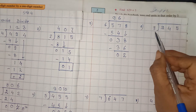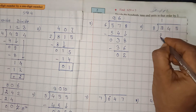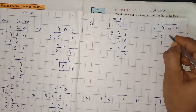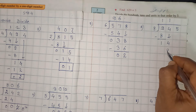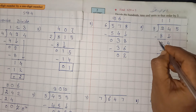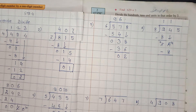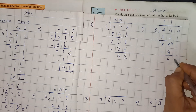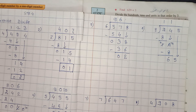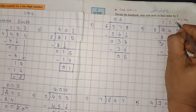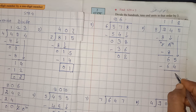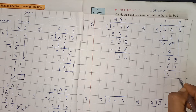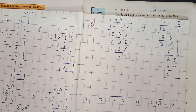Now, 945 divided by 8. 8 ones are 8. Minus 8 kar diya, 1 ho gaya. Phir 4 ko hum neeche le lenge. Again 8 ones are 8. Yahan pe bajega 0. Here it is 14. 14 minus 8 is 6. Yeh 5 ko hum neeche le lete hain, bachcho. Ab 8 ki table mein less than 65 — 8 eights are 64. Minus 64. 5 minus 4 is 1 and 6 minus 6 is 0. So here answer is 118 and remainder is 1.